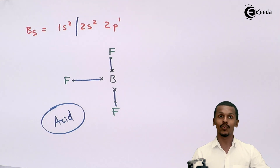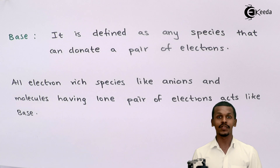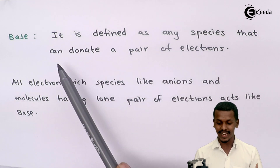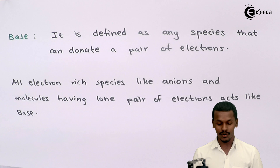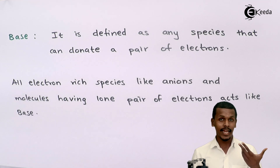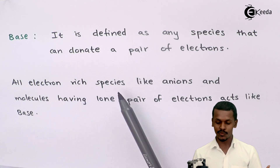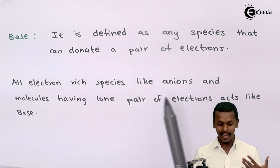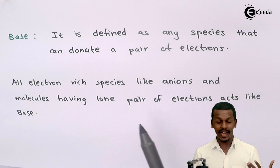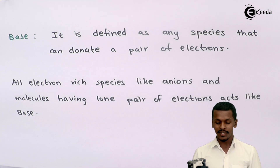Now let us talk about the Lewis concept of base. A base is defined as any species that can donate a pair of electrons. All electron-rich species — like anions and molecules having a lone pair of electrons — act like a base.